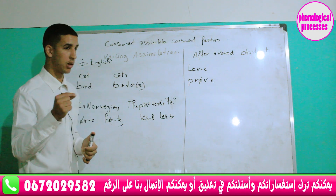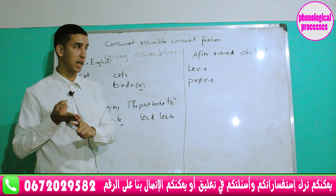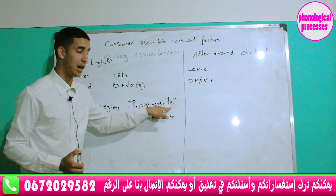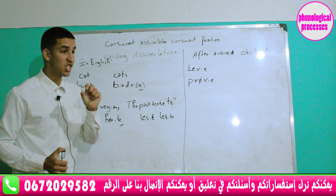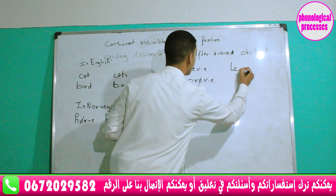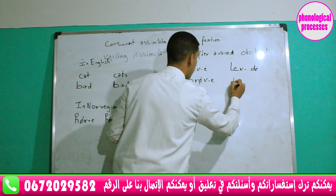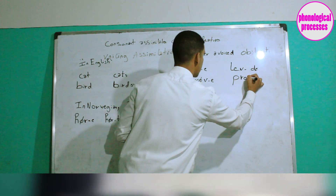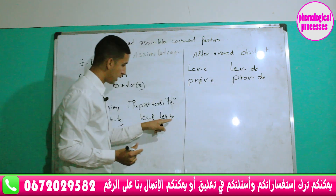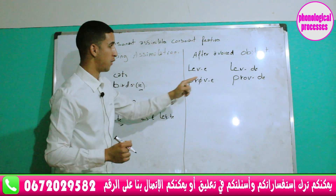However, after a voiced obstruent — obstruents include stops, fricatives, and affricates — the past tense suffix undergoes voicing, meaning it changes from -T to -D. For example, 'live' becomes 'lived', and 'improve' becomes 'improved'. The voiceless alveolar stop -T changes to a voiced alveolar stop -D.